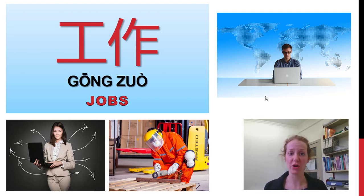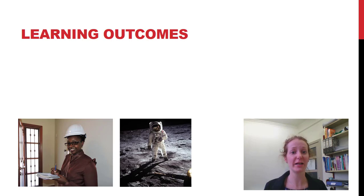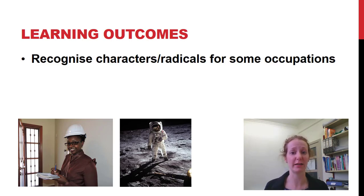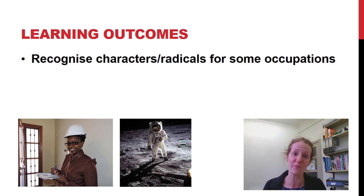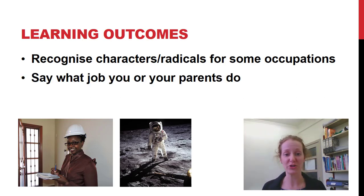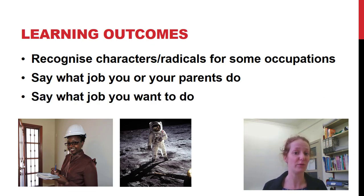大家好, 工作, jobs. The learning outcomes for this video are to recognize characters and radicals for some occupations. I'm going to go through a list of some main occupations with some important characters in them, and then right at the end after the follow-up I'm going to add some additional occupations. Stay tuned if I don't cover your parents' occupations right at the start because they might be at the end. We're also going to say what job you or your parents do, and say what job you want to do in the future — you might even want to be an astronaut!